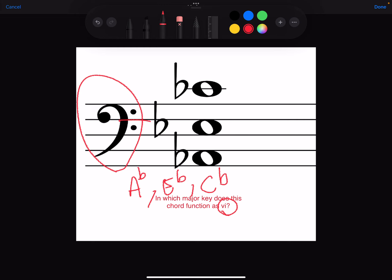C-flat major, yes, this key does exist. Everything's flat. Just like C major, everything's natural. C-sharp major, everything would be sharp. C-flat major, everything would be flat. C-flat does exist. It is enharmonically the same as B.